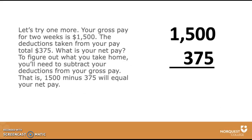Let's try one more. Your gross pay for two weeks is $1,500. The deductions taken from your pay total $375. What is your net pay? To figure out what you take home, you'll need to subtract your deductions from your gross pay. That is $1,500 minus $375, which will equal your net pay.